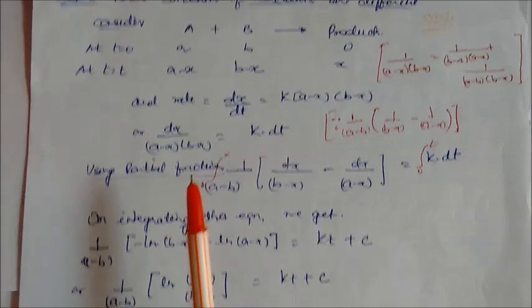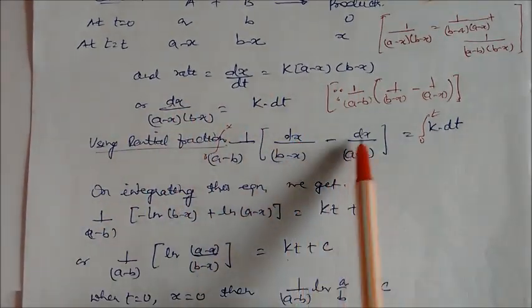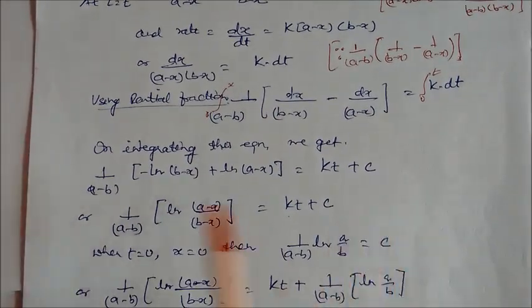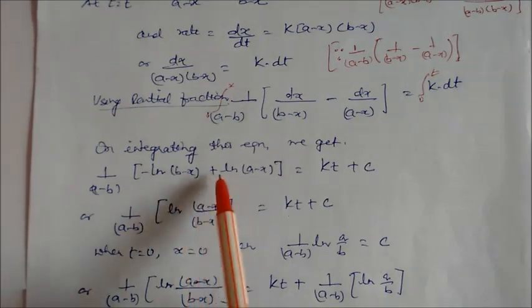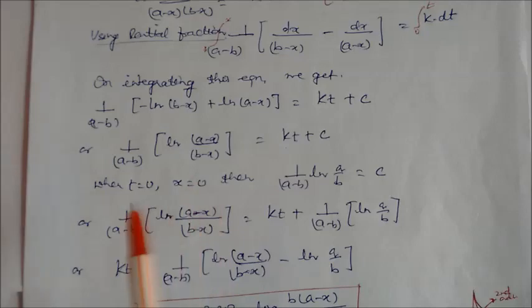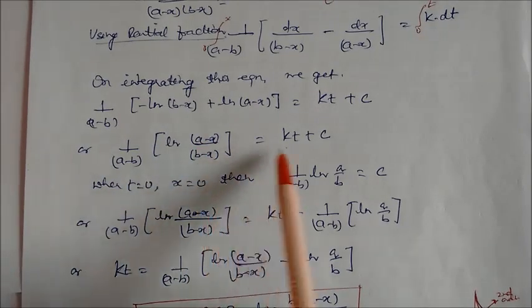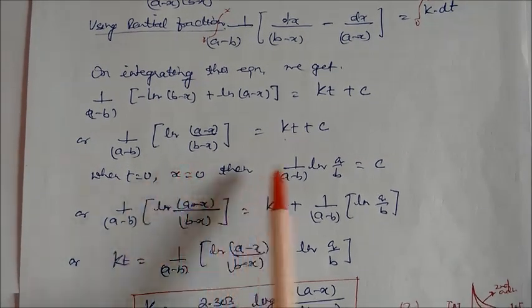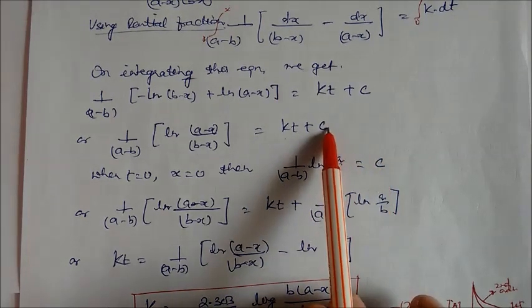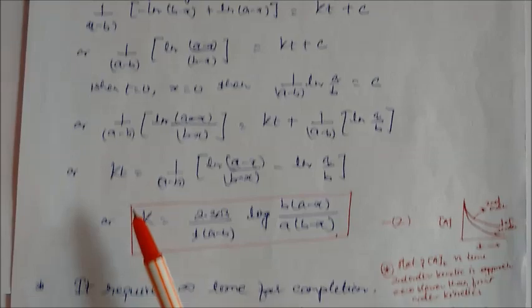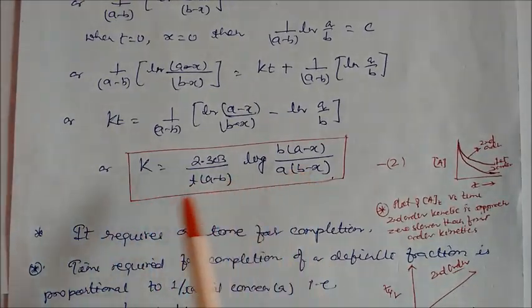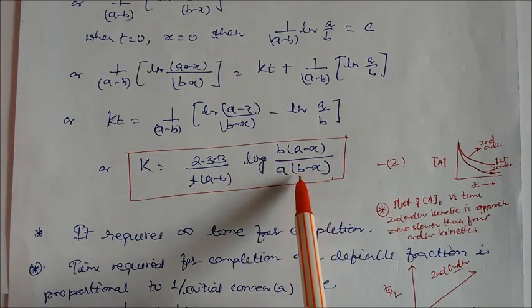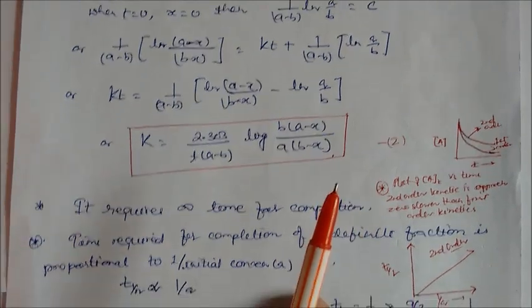Integrating, we get 1/(A−B) × [−ln(B−x) + ln(A−x)] equals Kt plus C. Applying t=0 and x=0, C equals 1/(A−B) × ln(A/B). After substitution and solving, K equals 2.303/[t(A−B)] × log[B(A−x)/(A(B−x))]. This is the integrated rate law for second order reaction with different initial concentrations.